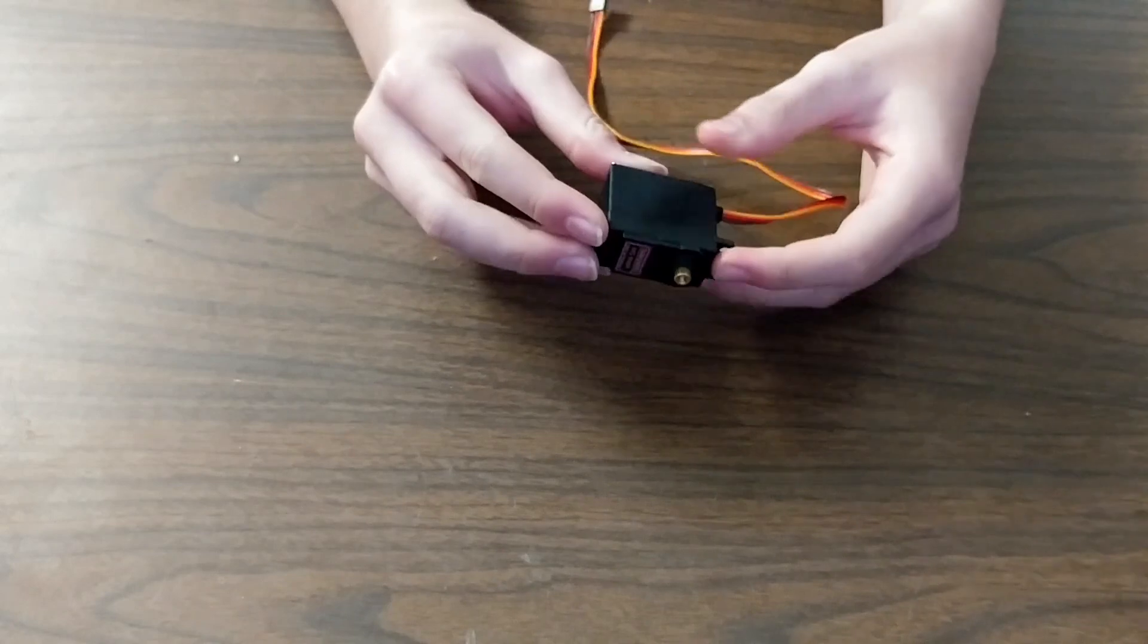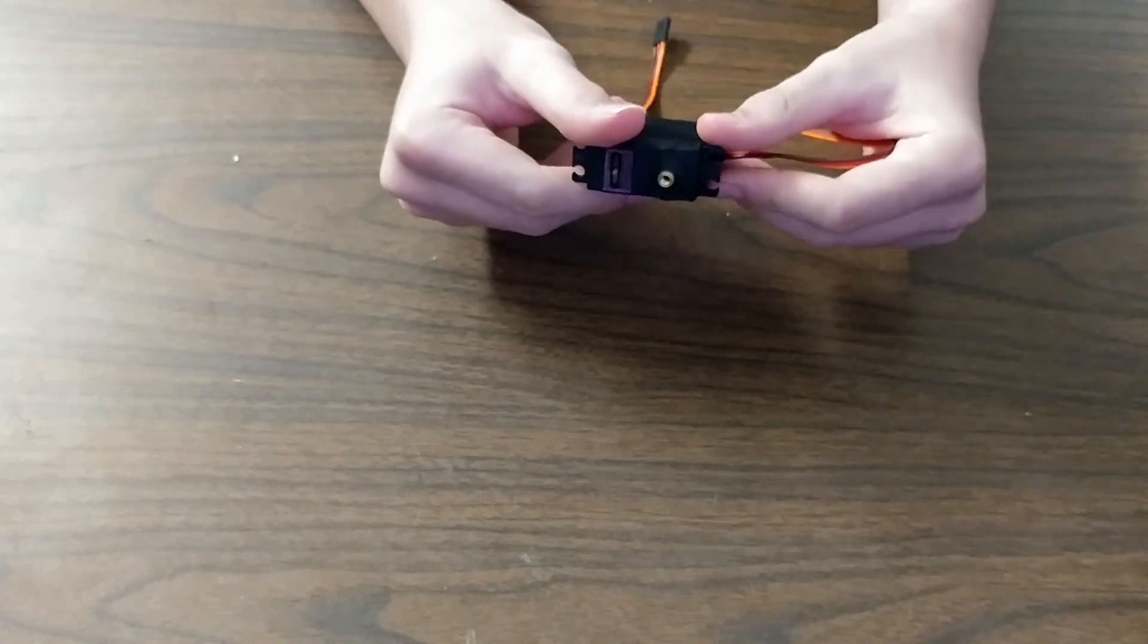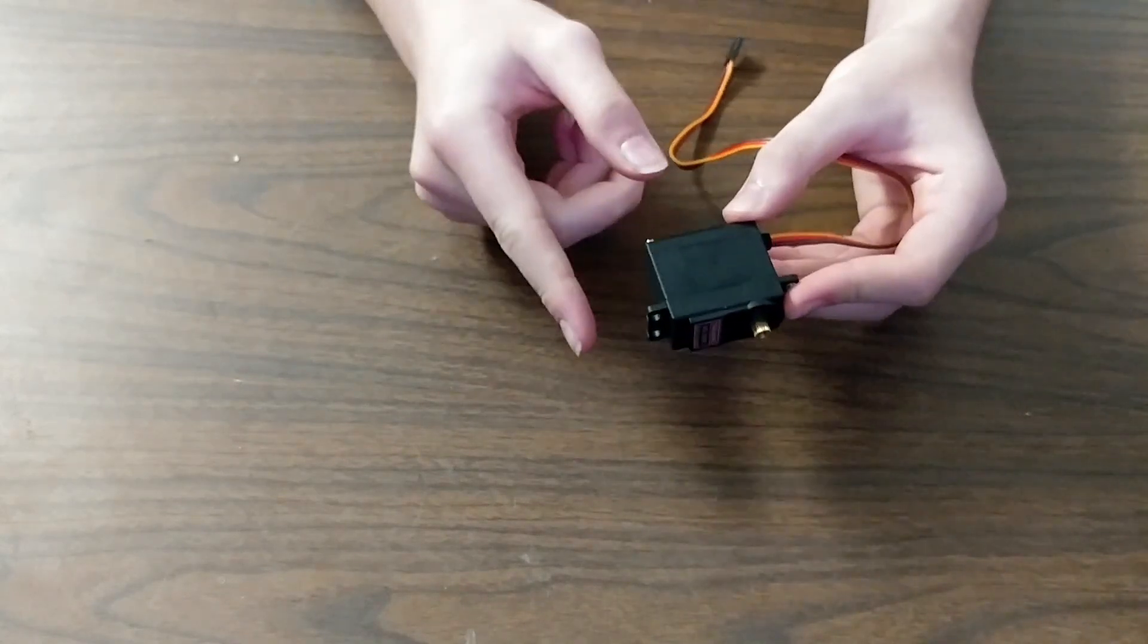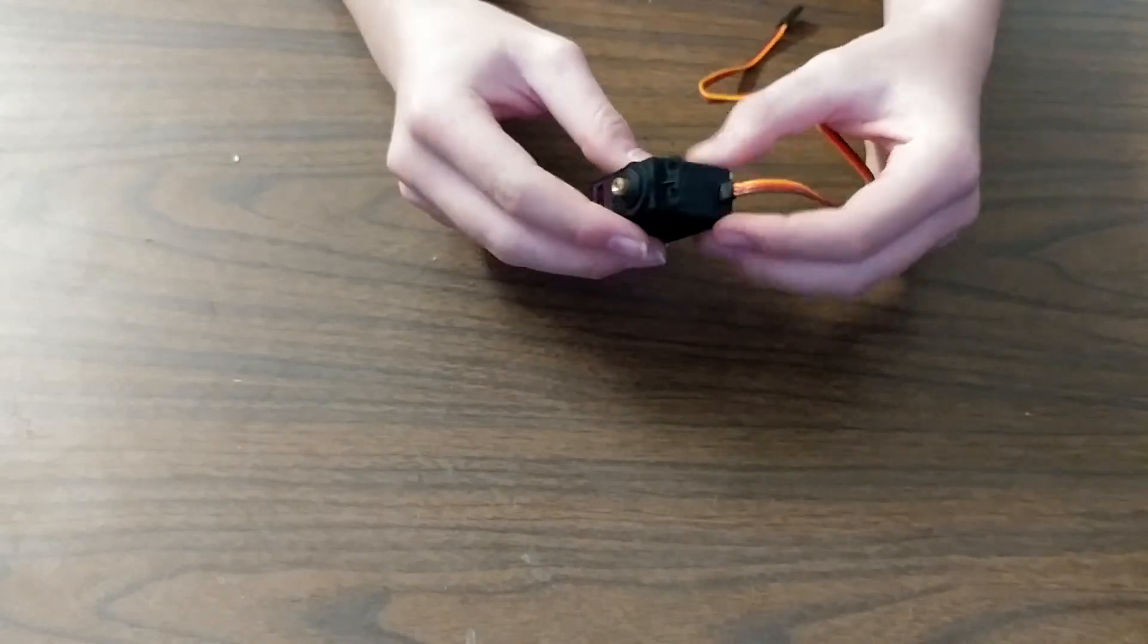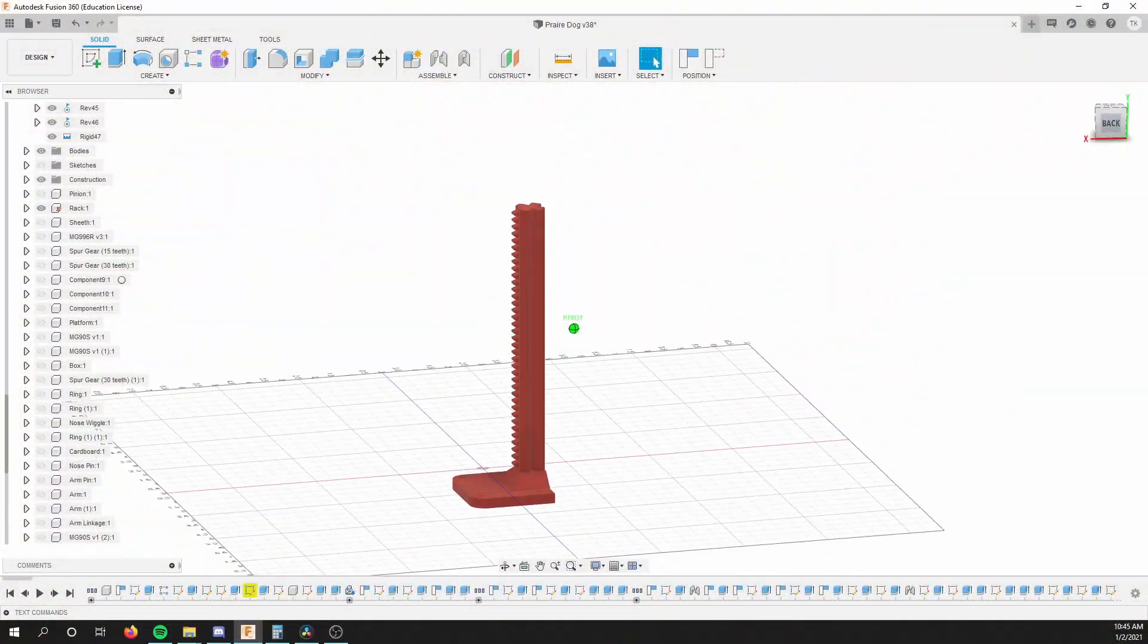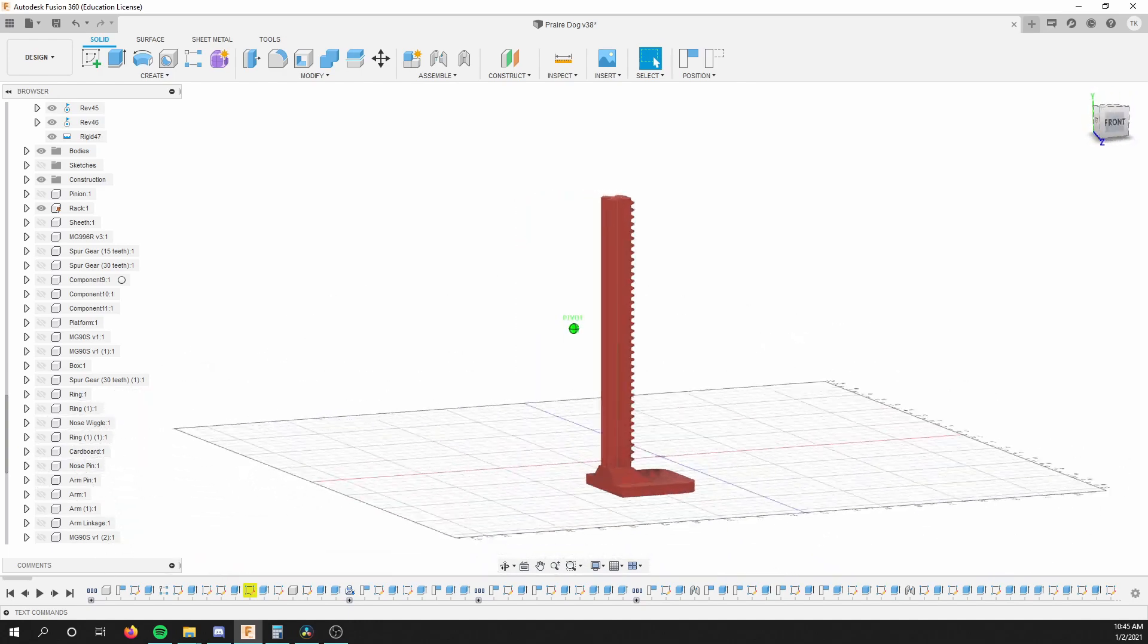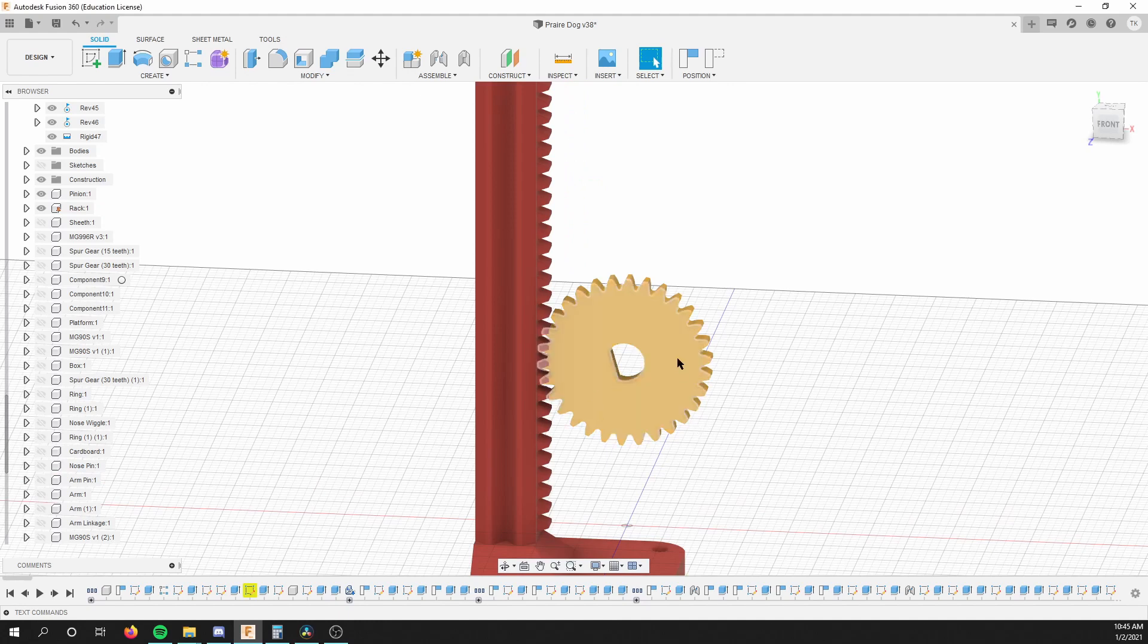At the heart of the lift mechanism is a rack and pinion setup driven by an MG996R servo. The rack and pinion converts rotary motion, like the rotation of a servo, to linear motion, like a prairie dog popping out of his hole. The rack is a pole with gear teeth on one side. The pinion meshes to these teeth, and when torque is applied to the pinion via the servo, the rack converts the rotary motion of the pinion to linear motion.